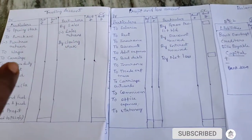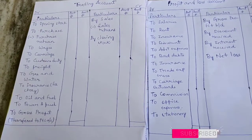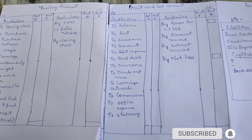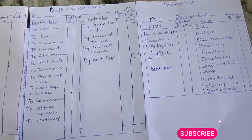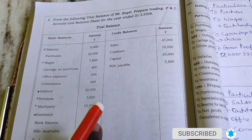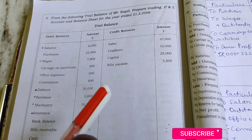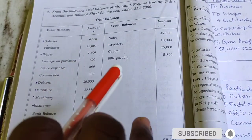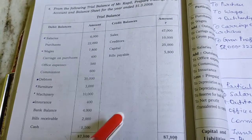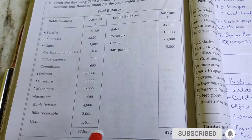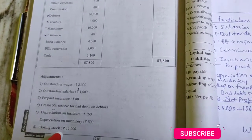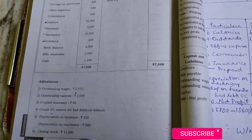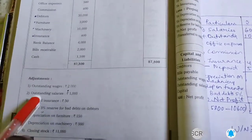Now I will explain the final account with the model question. As usual, we will make adjustments. There are 6 adjustments to work through as usual. These adjustments include outstanding wages, outstanding salary, prepaid insurance, provision for bad debts, depreciation, and closing stock.